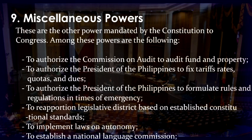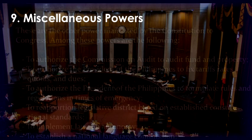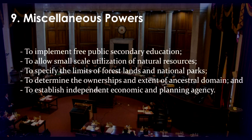Miscellaneous powers are other powers mandated by the Constitution to Congress, including: authorizing the Commission on Audit to audit funds and property, authorizing the President to fix tariff rates, quotas, and dues, authorizing the President to formulate rules and regulations in times of emergency, reapportioning legislative districts, implementing laws on autonomy, establishing a national language commission, implementing free public secondary education, allowing small-scale utilization of natural resources, specifying limits of forest lands and national parks, determining public ownership and extent of ancestral domain, and establishing an independent economic and planning agency.